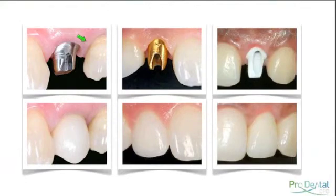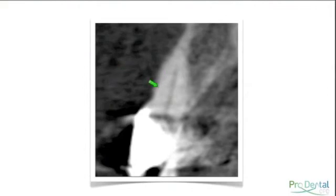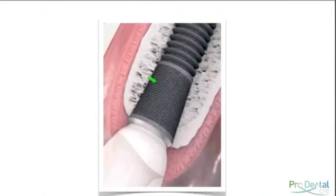A major issue for me is preserving the crestal bone. This cross-section of a central incisor on CT scan shows that the buccal plate is typically so thin you can't even see it. When placing an implant, we are taught to try and leave at least a millimetre of buccal plate to help maintain soft tissue stability, since the bone must be there to support the soft tissue. There are other surgical techniques, such as guided bone regeneration, that we can employ to help preserve this crestal bone.